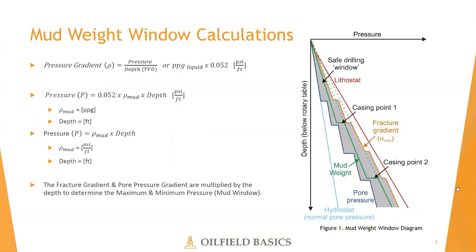Next, let's talk about mud weight window calculations. To determine a pressure gradient, we divide the pressure at a given depth by the true vertical depth. On the other hand, if we have the gradient and want to solve for the pressure at a given depth, we can simply multiply the mud or fluid density by the depth, assuming we have similar units of measure — for example, mud or fluid density in psi per foot and depth in feet. It is common to be given the mud density in pounds per gallon; if this is the case, we can multiply the mud density by the depth and 0.052 to calculate the pressure. Regarding the mud weight window, the calculated fracture gradient and pore pressure gradients are multiplied by the depth to determine both the upper and lower bounds of our window.